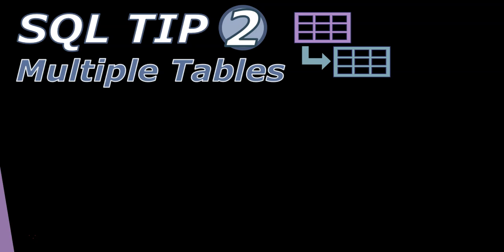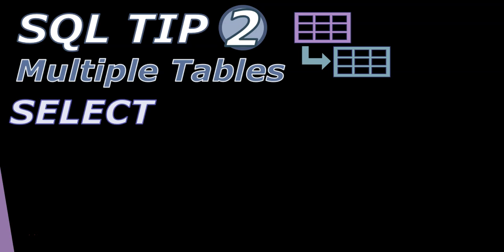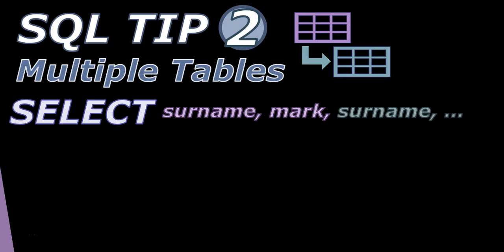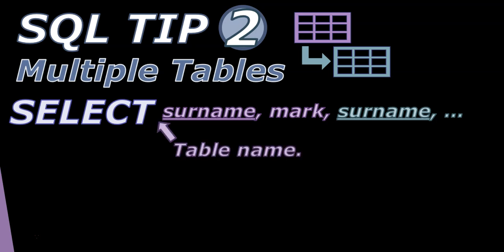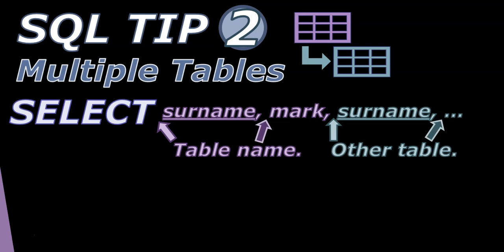Tip number two: when you are dealing with multiple tables. When selecting field names, there may be times when you are selecting fields from both tables that have the same name — for example, a surname in the purple table and a surname in the blue table. So how does it know which one is which? If fields have the same name in multiple tables, you need to put the table name with a dot in front of the field name for each.